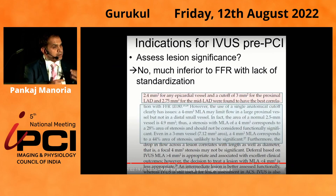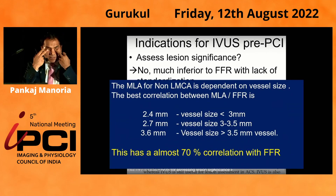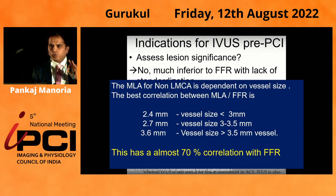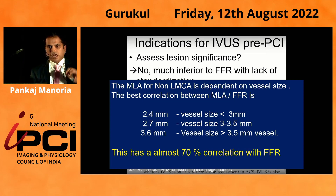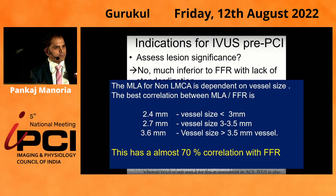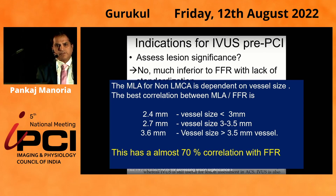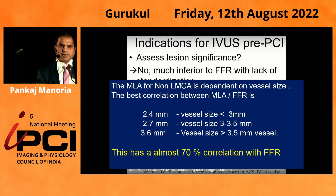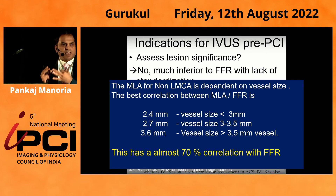Can we use these areas to decide whether to do an intervention or postpone it? The answer is no. The MLA cutoff of 4 mm² previously used to rule out intervention is not a good criterion. Though IVUS has a good correlation with FFR, it depends on the normal reference vessel size. For a vessel less than 3 mm, a 2.4 mm² MLA usually has an FFR less than 0.70. For a vessel between 3 to 3.5 mm, an MLA less than 2.75 mm² correlates with FFR more than 0.70. For a large vessel of 3.5 mm, an MLA less than 3.6 mm² has a good correlation with FFR more than 0.70. Only one value is not sufficient; you have to correlate with the normal reference segment to assess the physiological significance of the lesion.